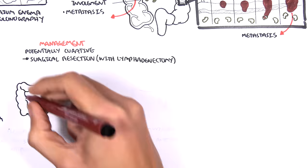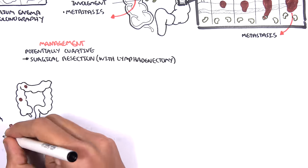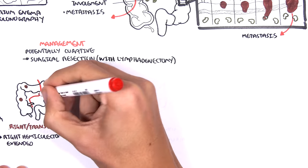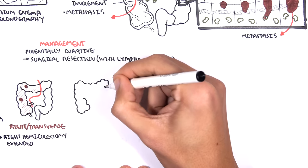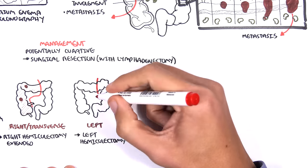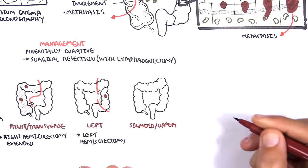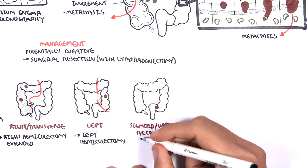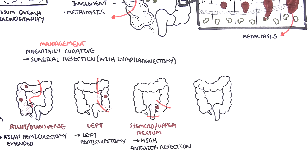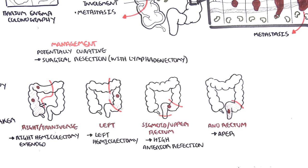Tumors that occur on the right side of the large intestine, or in the right transverse area, requires a right hemicolectomy extended. Tumors occurring on the left side require left hemicolectomy. Tumors occurring in the sigmoid and upper rectum require high anterior resection. Tumors in the rectum require APER, abdominal perineal resection.